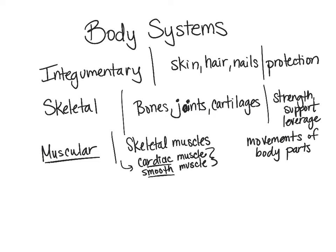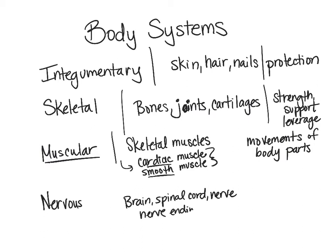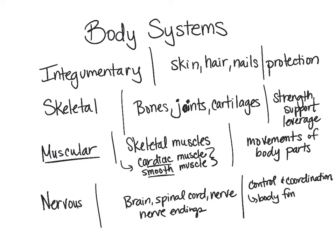The next system is the nervous system, composed of our brain, our spinal cord, and the associated nerves and nerve endings. The function of the nervous system is for control and coordination — this is one of the ways that we control and coordinate body functions.